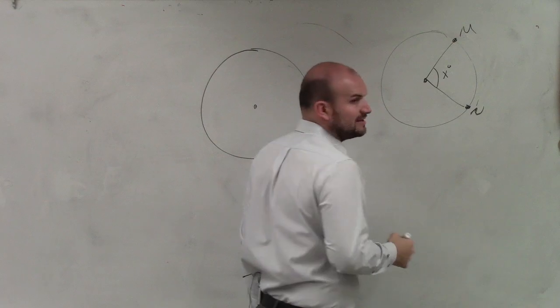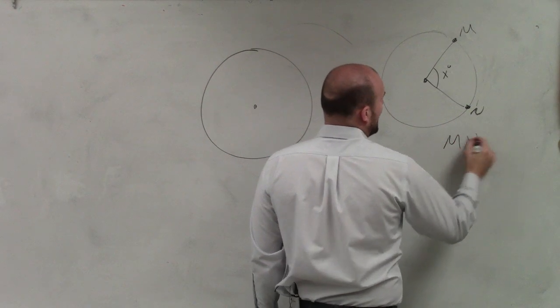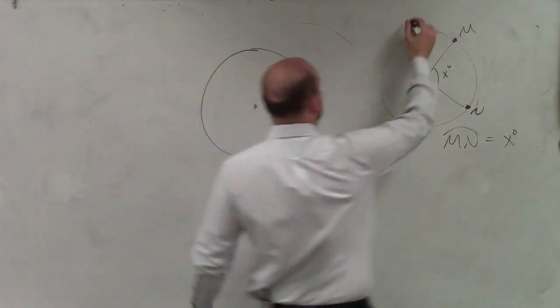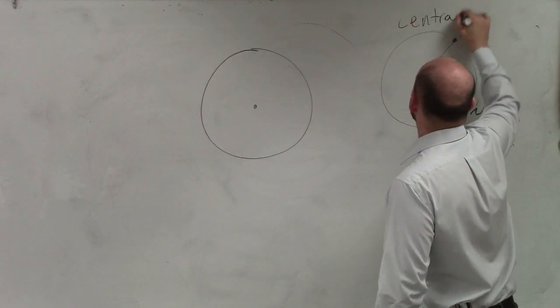What's important about a central angle is that the arc MN is equal to the measure of x degrees. This is what we call a central angle.